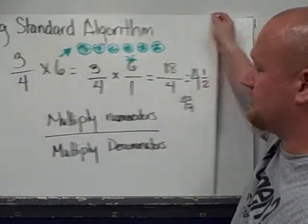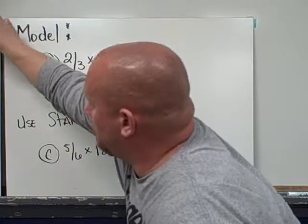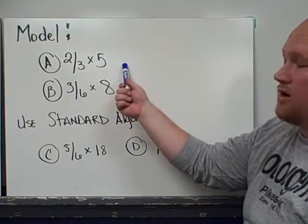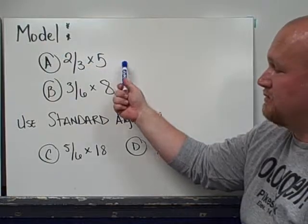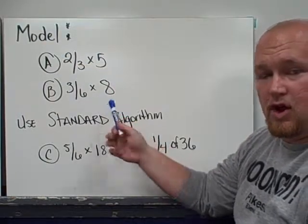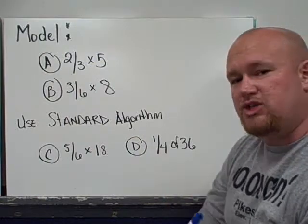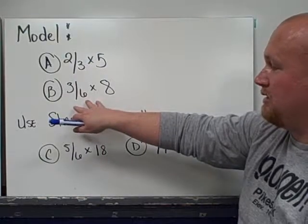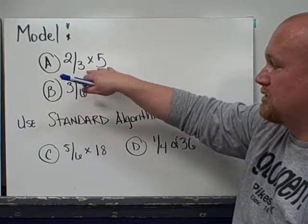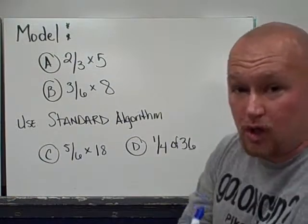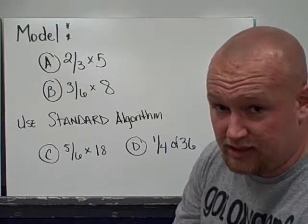What I'd like you to practice tonight is I'd like you to first try modeling two-thirds times five and try modeling three-sixths times eight. Go back and review the video, and whichever model you think is easier, whether that's flip-flopping with the commutative property or using two-thirds of five, model it the best you can. Use the video if you need help.